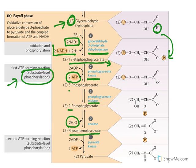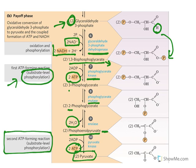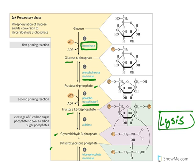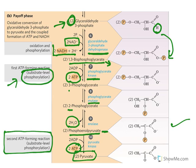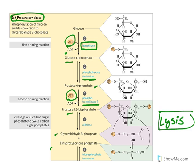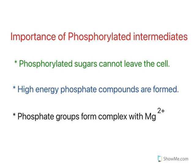2-phosphoglycerate is dehydrated and phosphoenolpyruvate is formed. Phosphoenolpyruvate is a high energy compound which releases ATP — again substrate level phosphorylation. Finally it forms 2 pyruvates. The first stage of glycolysis is known as the preparatory phase, where ATP is consumed. The second stage is the payoff phase, where ATPs are released.